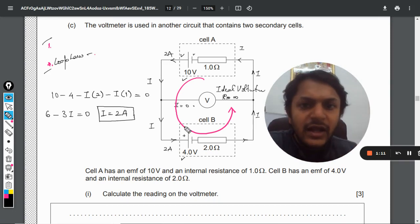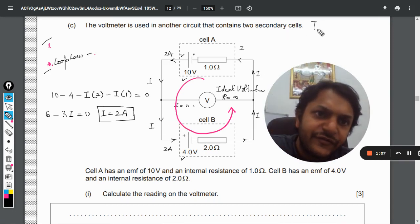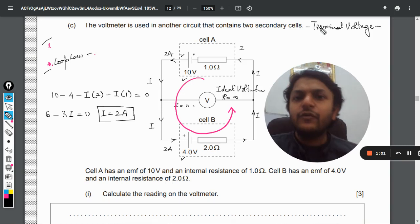Now there is another formula which is the formula for the terminal voltage. So terminal voltage is the potential difference across a battery with internal resistance when the current i is passing through it.